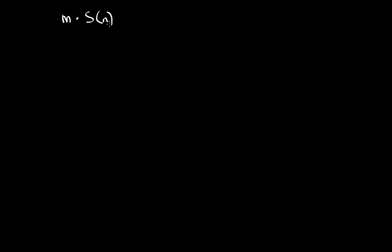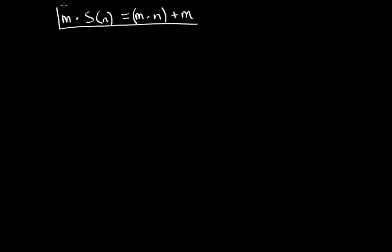In this video I want to show that we have a similar rule for multiplication as well. If we have some number m multiplied by the successor of another number n, this is equivalent to m times n — in brackets — plus m. This is very important because we can prove normal arithmetic multiplication through this method.